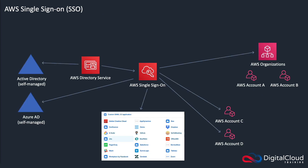Another thing is called single sign-on. In this case, you might have a directory on Azure, Microsoft Azure, or an Active Directory in your data center. And you need to be able to connect from those sources, or even from lots of applications like Confluence and Gmail G Suite. From those sources, you want to be able to authenticate and then access multiple AWS accounts. The ability to do that is called single sign-on — it means you log in once and you're able to access different accounts, so you don't have to keep re-entering your password.